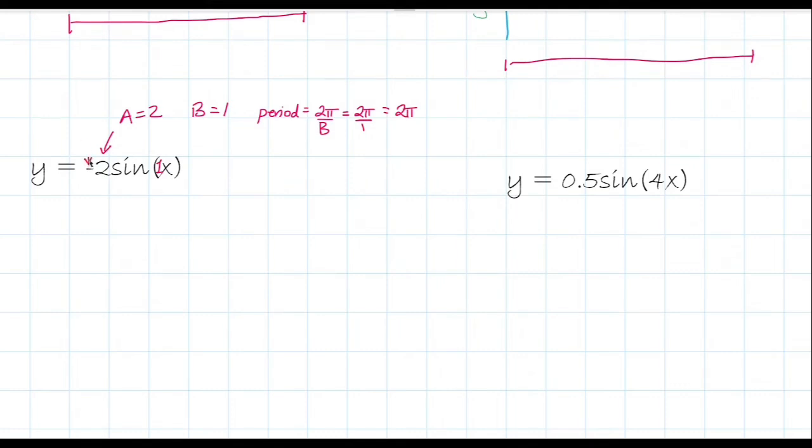And what this negative tells us is that we will get a reflection about the x-axis. So what that means is our graph is vertically flipped.